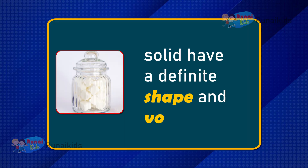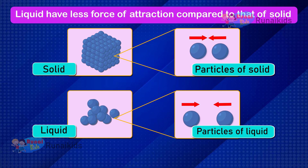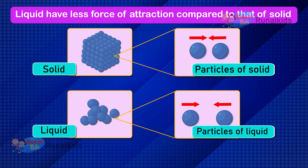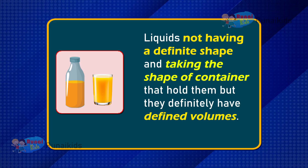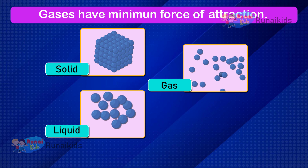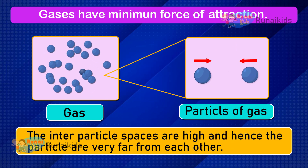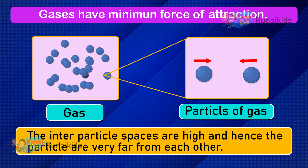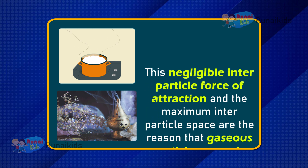This is also why solids have a definite shape and volume. In liquids, the force of attraction is less compared to that of solids, so the particles are spaced apart and can readily move — this is why liquids do not have a definite shape and take the shape of their container, though they do have a definite volume. Among the three states of matter, gases have a negligible or minimum force of attraction, so their inter-particle spaces are high and the particles are very far from each other.